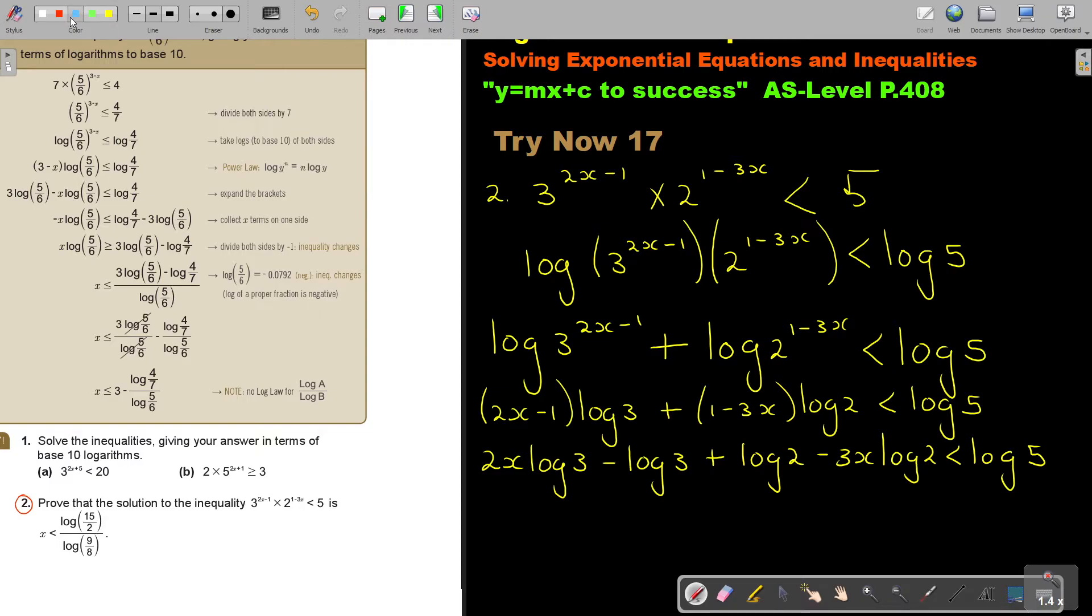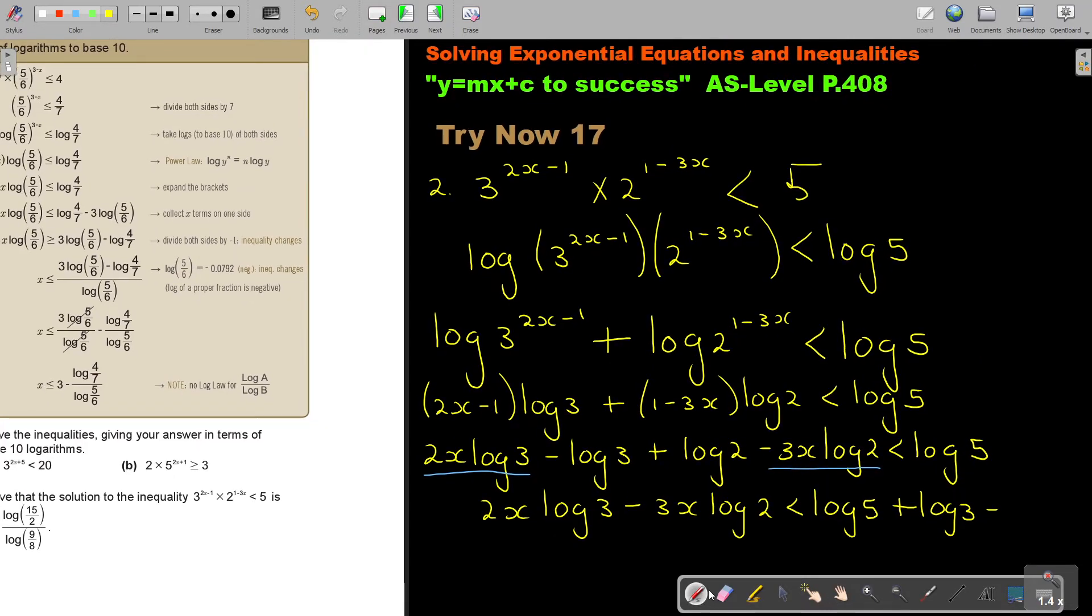Now let's find all the ones with an x. There's an x, there's an x. This one is not having, so take it to the other side. So I'm going to end up with 2x log 3 minus 3x log 2, smaller than log 5 plus log 3 minus log 2.